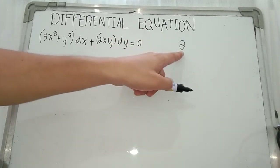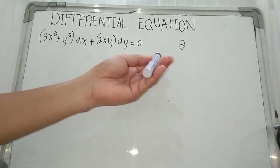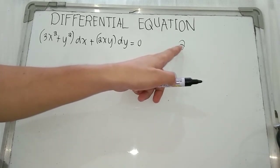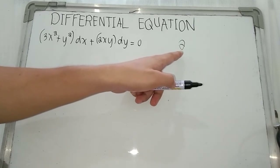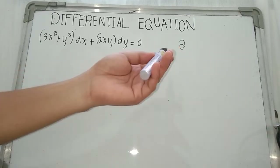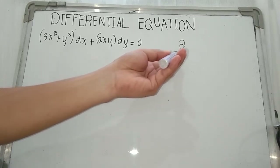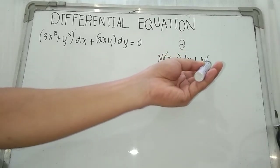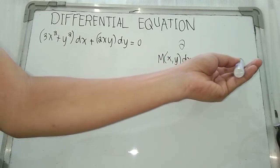This symbol indicates partial differentiation, and we use this symbol to get the derivative of a function having two or more variables. For example, if we have M(x, y) dx plus N(x, y) dy is equal to 0.